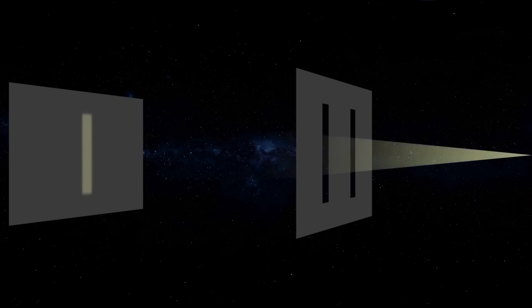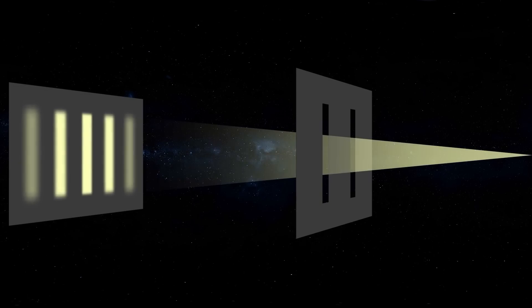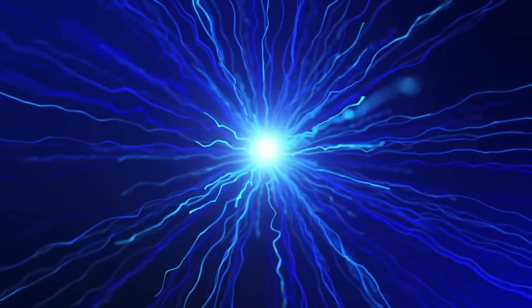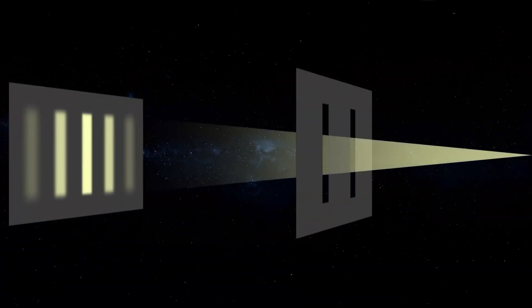But in the double slit experiment, something awfully strange happens when you shine a light through the slits. Light isn't just a wave, it's also a particle called a photon. Now if you shoot a single photon at the double slits, it forms an interference pattern on the back wall, as if it is interfering with itself. It's like the photon went through both slits at the same time. But this is where it gets stranger.